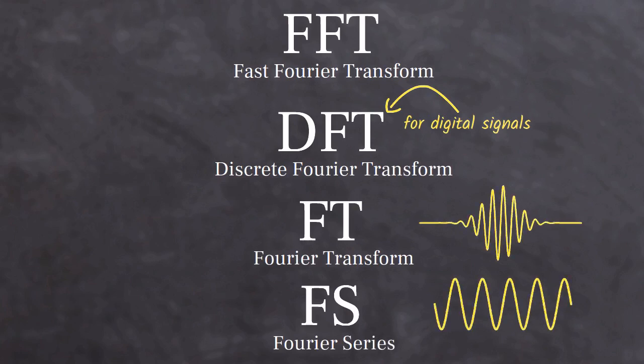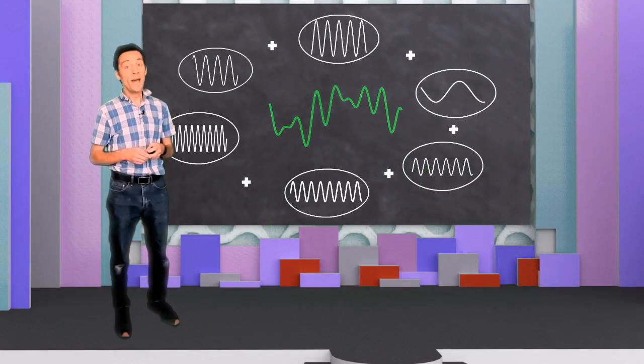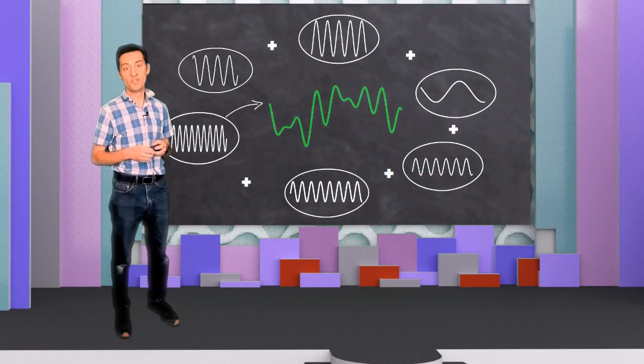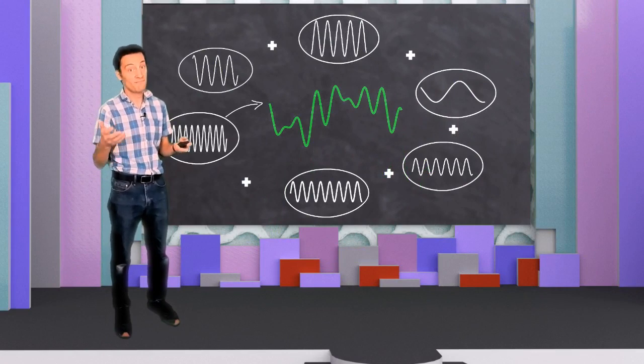The principle behind the Fourier Transform in all its forms is always the same. It assumes that your signal is built out of sinusoids. Apart from a couple of theoretical exceptions, in the real world, this is a pretty good assumption.